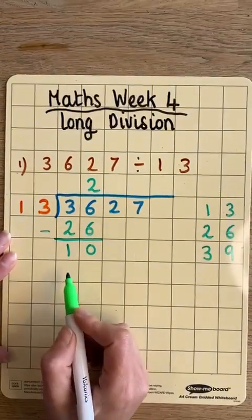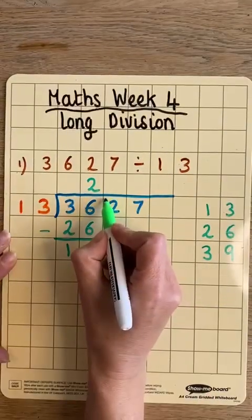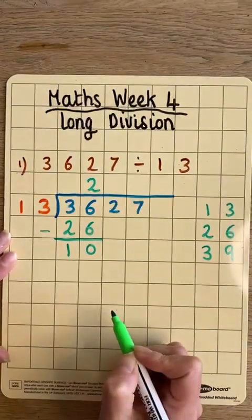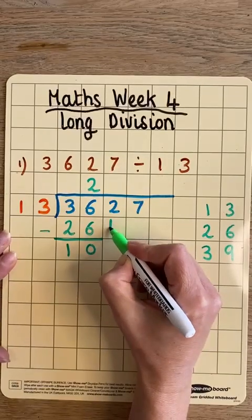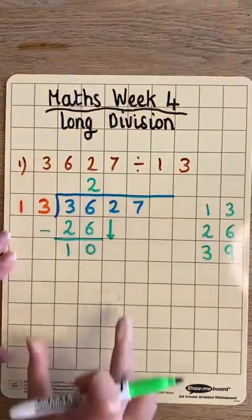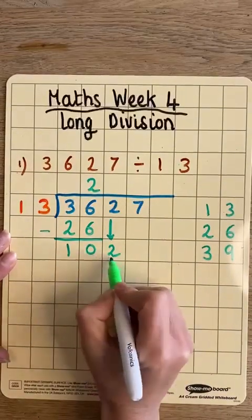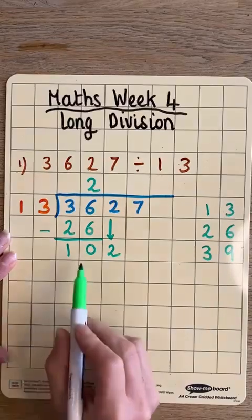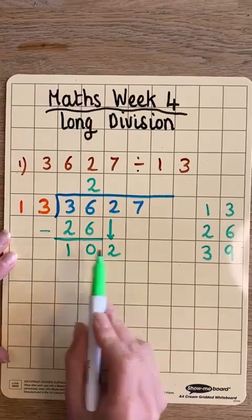In short division we would put the remainder up in front of the next number, but because our numbers are longer it becomes too complicated. In long division we spread out our workings moving down the page. That 2 moves down to our remainder and creates the number 102, which is our next number to divide up.